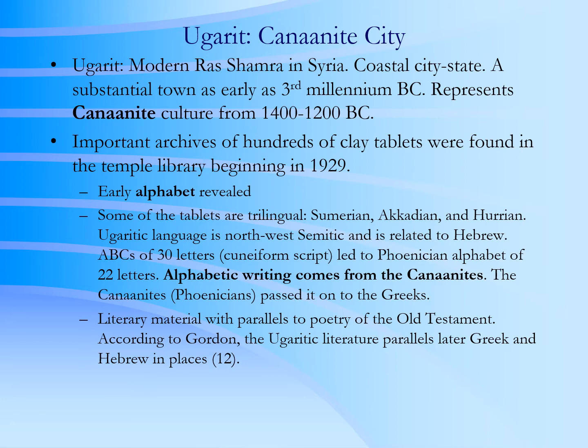The discoveries at Ugarit are somewhat later than Ebla — that is, the significant writings found there. But already there seems to be an alphabet forming. The alphabet comes from these Western Semitic peoples, and something like an alphabet is appearing at Ugarit. The importance of Ugarit to Old Testament studies cannot be overstated — in fact, it has been written that the tablets discovered at Ugarit are second only to the Dead Sea Scrolls in helping us understand the language and culture of the Old Testament.